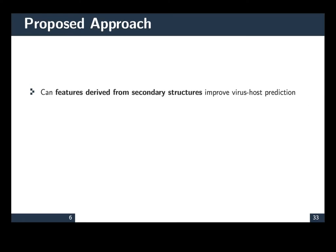With this work, we wanted to know, can features derived from secondary structure improve virus host prediction, either using secondary structure information alone or combined with sequence information? And we use deep learning.